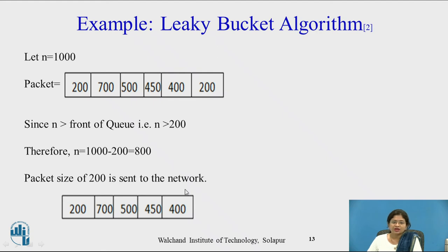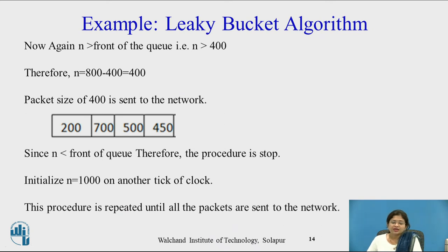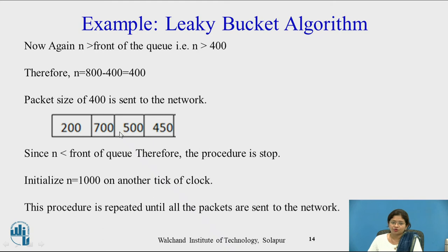With 4 packets remaining, the front of the queue is 450. Since N (400) is less than the front of the queue (450), the procedure stops. We then initialize N back to 1000 on the next tick of the clock, and this procedure is repeated until all packets are sent to the network. This is the leaky bucket algorithm.